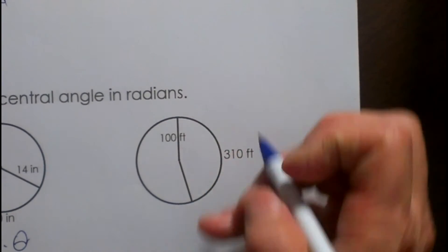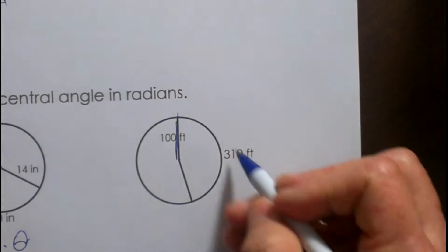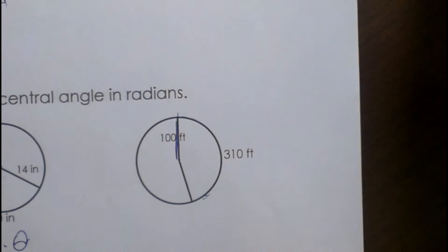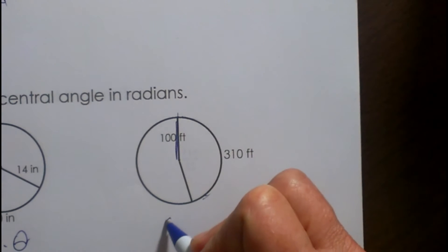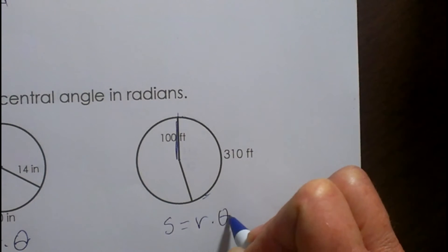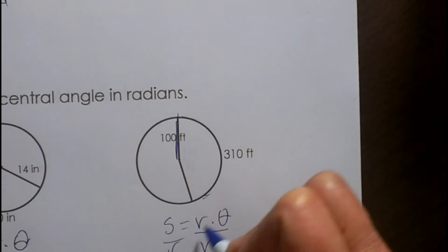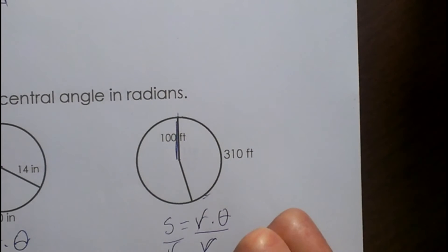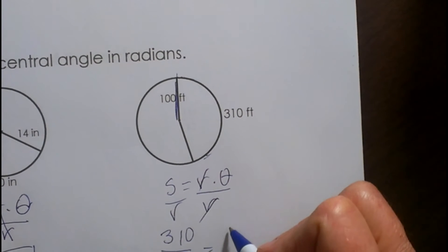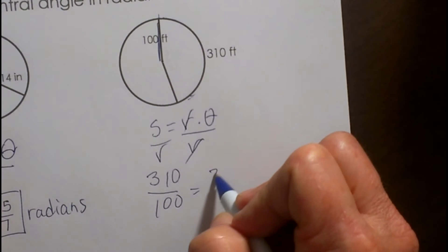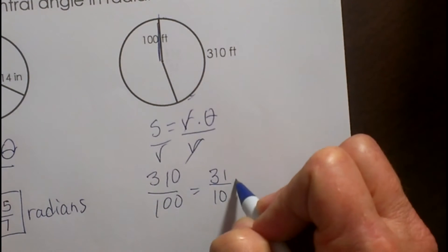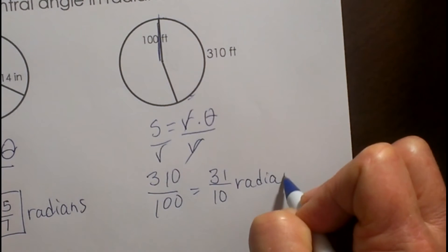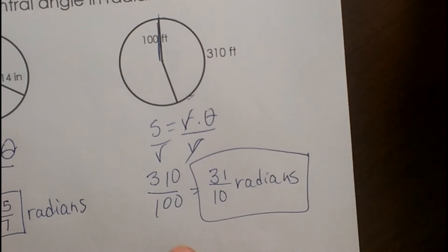Let's look at one more. Our radius is 100 and our arc length is 310. S equals R times theta — isolate theta by dividing: 310 divided by 100 reduces to 31 tenths radians. That is our angle measure, again without a pi, and that is okay.